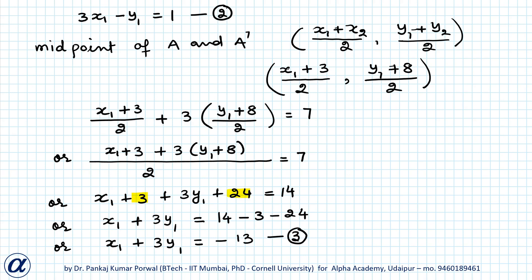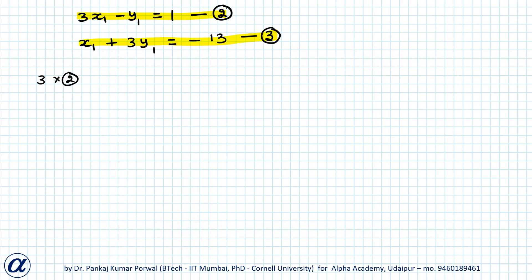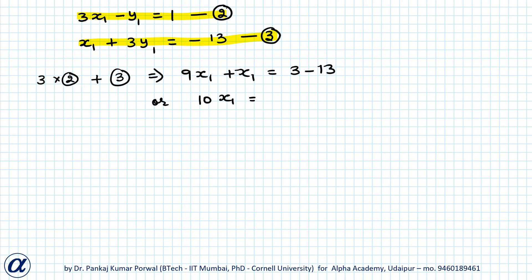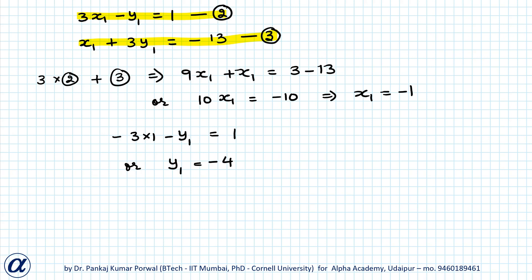We solve equations 2 and 3 together. Taking 3 times equation 2 plus equation 3: 9x₁ plus x₁ equals 3 minus 13, so 10x₁ equals minus 10, giving x₁ equals minus 1. Substituting x₁ into equation 2: minus 3 minus y₁ equals 1, so y₁ equals minus 4. Therefore, the image of point (3, 8) is (minus 1, minus 4).